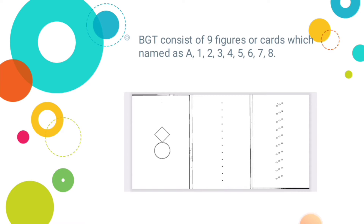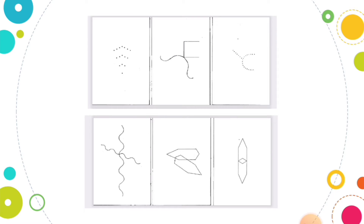The names of those cards are as follows. The first card shown here is called the A card. The names of these cards are written on their back side — first card is A, second is 1, third is 2, fourth is 3, then 4, 5, 6, 7, 8. So in total the Bender Gestalt Test consists of nine cards.